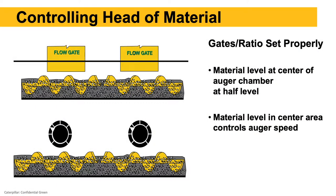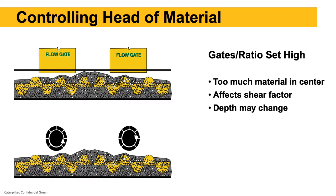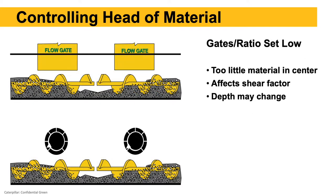Controlling head of material with ratio dials or flow gates is about controlling the amount of mix that comes back to the center of the screed. If the ratio dials or flow gates are set too high, we get too much mix back there and depth will likely increase. If we don't get enough mix back — flow gates too low, choking it down, or ratio dials too low — the screed wants to drop.